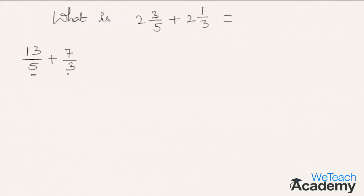Hence 13/5 plus 7/3. Now if you observe, in both of these fractions the denominators are different, so we need to find the lowest common denominator of 5 and 3, which is 15.